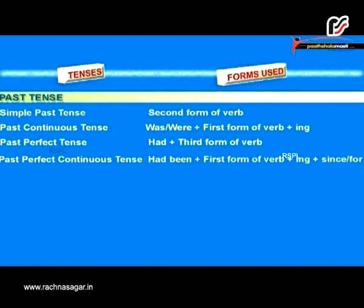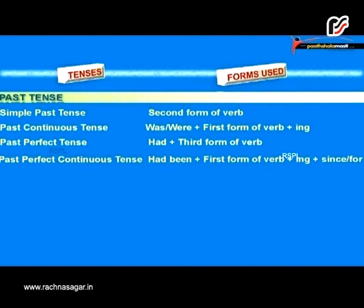In simple past tense the form used is the second form of verb. Past continuous: was/were plus first form of verb plus -ing. Past perfect tense is had plus third form of the verb.